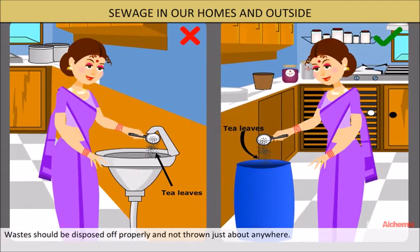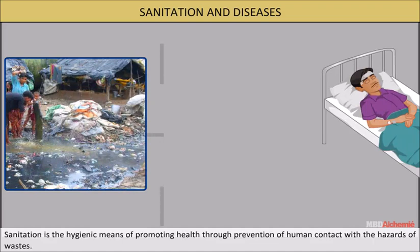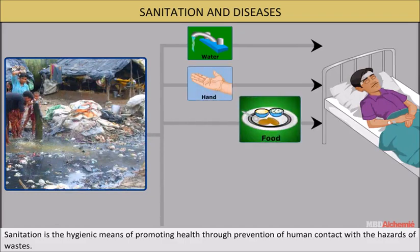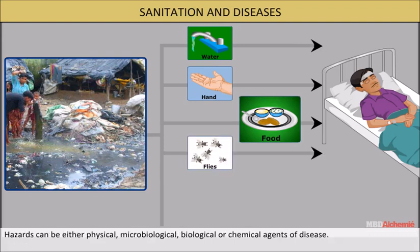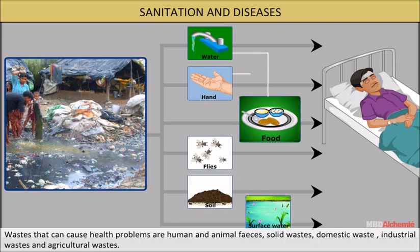Wastes should be disposed of properly and not thrown just about anywhere. Sanitation and diseases: sanitation is the hygienic means of promoting health through prevention of human contact with the hazards of wastes. Hazards can be either physical, microbiological, biological, or chemical agents of disease. Wastes that can cause health problems include human and animal feces, solid wastes, domestic wastes, industrial wastes, and agricultural wastes.